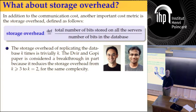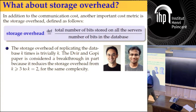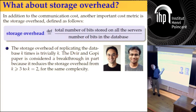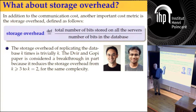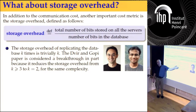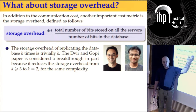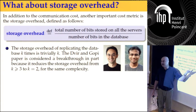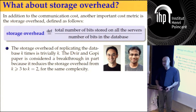The Dvir-Gopi paper reduced the storage. What is the storage overhead for a K-server PIR? It's trivially just K — we replicate the database K times. So that paper in particular reduces the storage overhead from a factor of three, at least, to a factor of two.